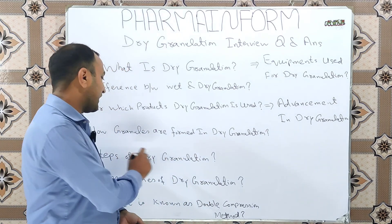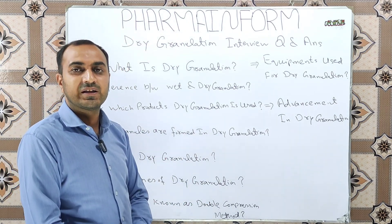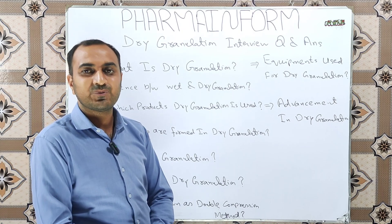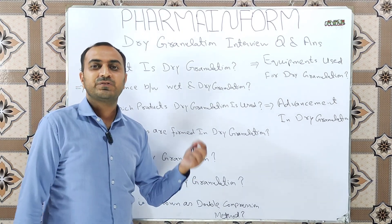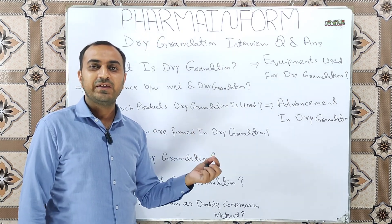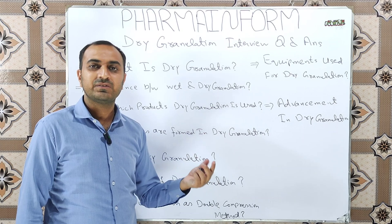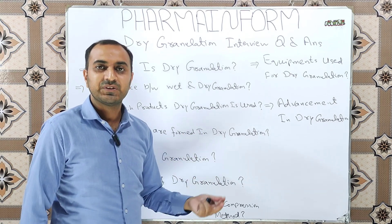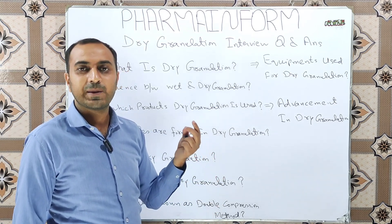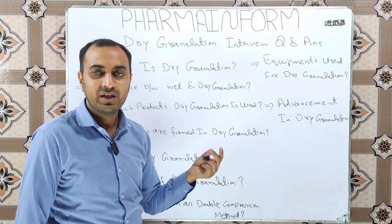The next question is: what are the steps of dry granulation? The steps are: first, weighing; second, sieving; third, mixing; and fourth, application of pressure.